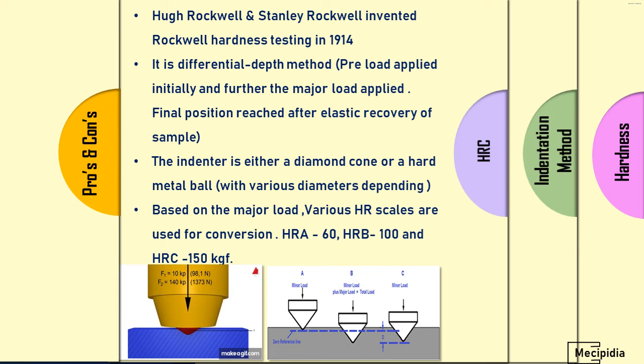The intender is either a diamond cone or hard metal ball based on the application. There are various scales used in Rockwell hardness. Three scales are widely used: HRA, HRB, and HRC. HRA is 60 kg load applied, HRB is 100 kg, and HRC is 150 kg.